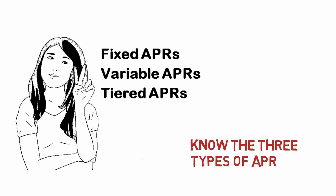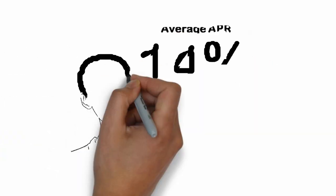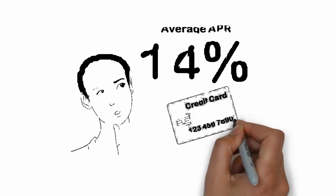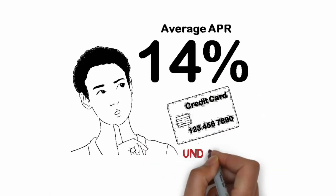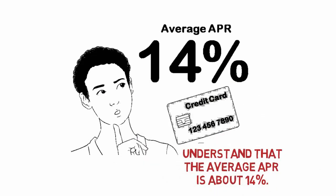For example, your APR might be 4% for debts below $1,000, but raise to 7% if you cross $1,000. Understand that the average APR is about 14% — that's not an insignificant sum, especially if you are unable to pay off the principal quickly. Average fixed rates hover slightly below 14%, while average variable rates hover slightly above 14%.